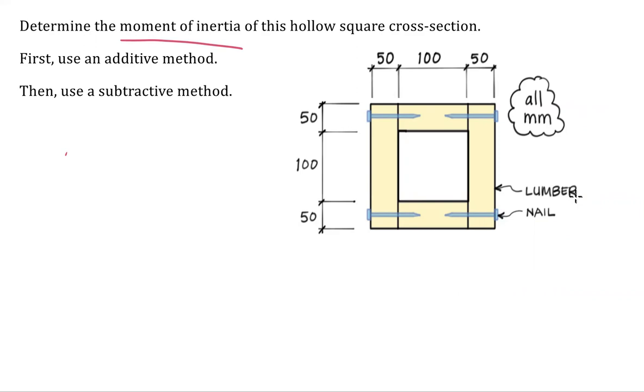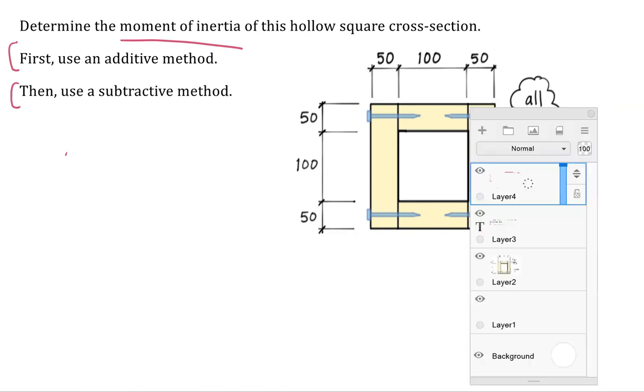You're right. They're just a little bit too big. Diameter's a little bit too big. But that's okay. We're going to neglect the nails as we do our moment of inertia calculation. And we're going to do this calculation twice. So we're going to use the additive method first and a subtractive method second.